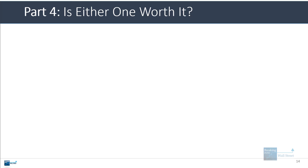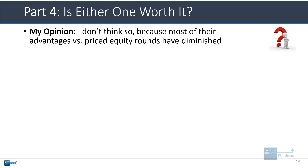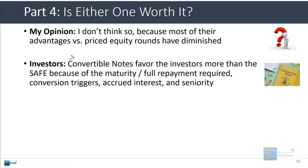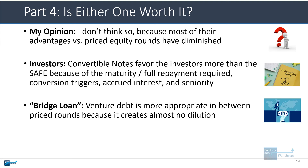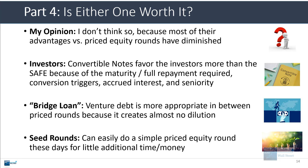Is either one of these worth it for startups? This is opinionated, but I would say no, not really. Maybe 10 or 15 years ago you could make a case because priced equity rounds were more complicated and expensive. Convertible notes definitely favor investors more than safe notes because of the full maturity and repayment required, the different conversion triggers, the accrued interest, and their seniority to safe notes, preferred, and common equity. But if the startup is looking for a bridge loan, venture debt is actually better because it creates almost no dilution. Seed rounds can be done with a simple priced equity raise — it's not really that much more complicated or expensive these days.